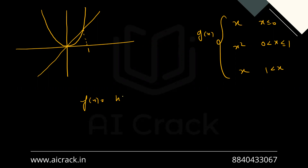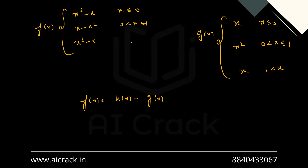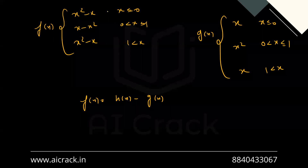Now we find f(x) = h(x) - g(x). The piecewise function of f(x) is: x² - x for x ≤ 0, x - x² for 0 < x ≤ 1, and x² - x for x > 1.